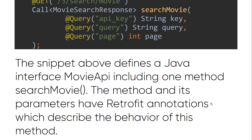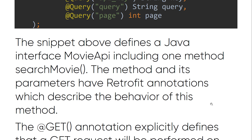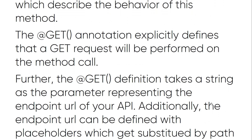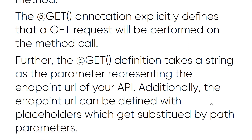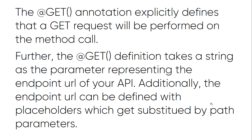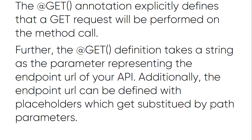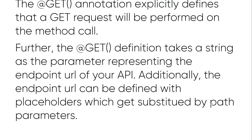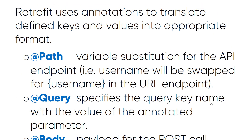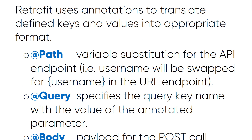The snippet above defines a Java interface called MovieAPI including one method, searchMovie. The method and its parameters have Retrofit annotations which describe the behavior of the method. The @GET annotation explicitly defines that a GET request will be performed on the method call. Further, the @GET annotation takes a string as a parameter representing the endpoint URL of your API. Additionally, the endpoint URL can be defined with placeholders which get substituted by path parameters.